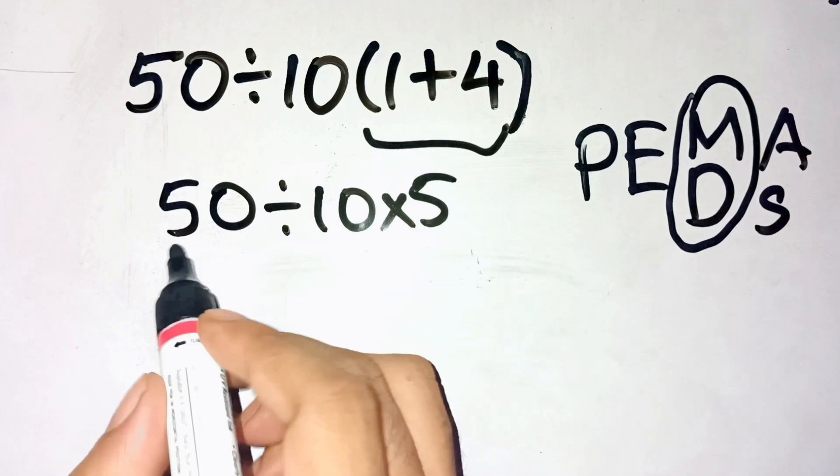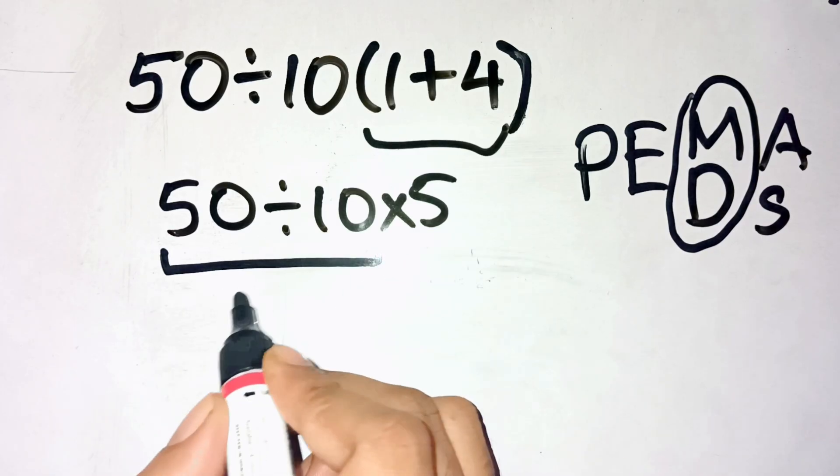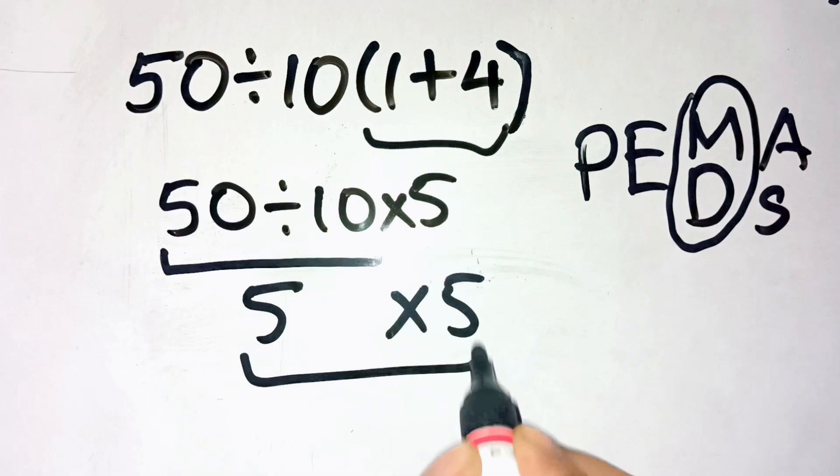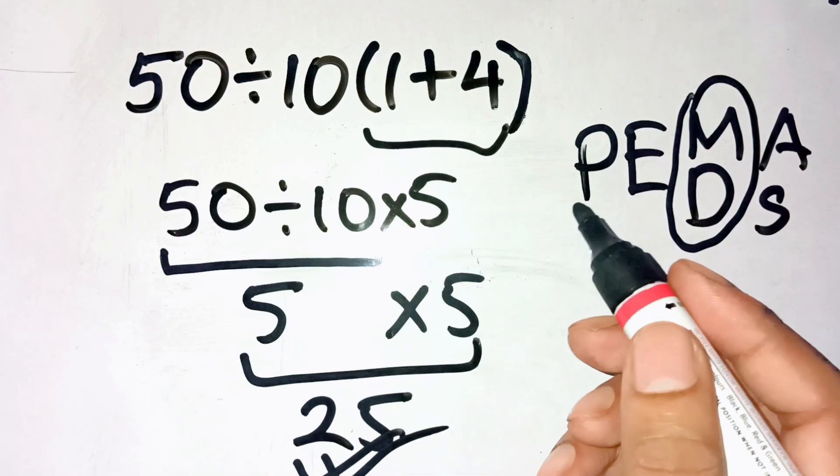So, from the left, 50 divided by 10 equals 5. And then 5 multiplied by 5 equals 25. That's it. The correct answer is 25, not 1.